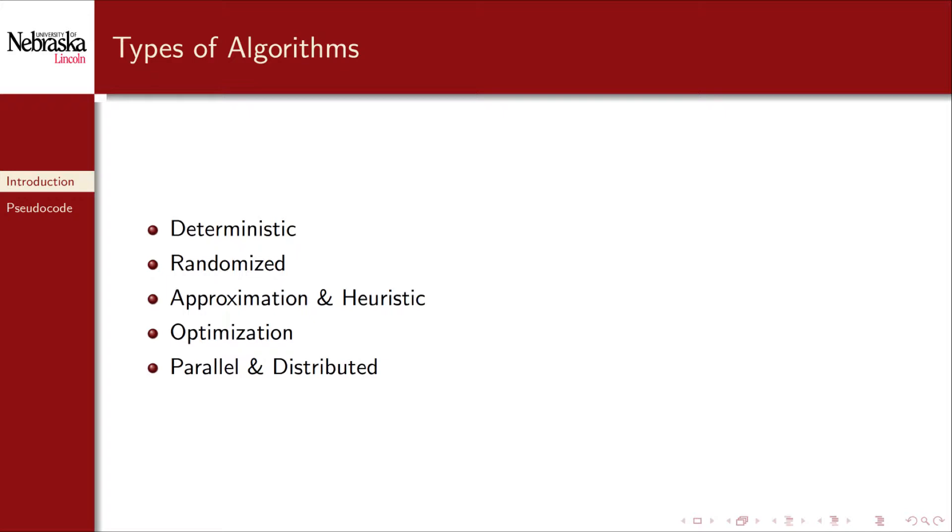Often algorithms are needed not just to find a solution but the best solution so as to maximize or minimize some benefit or cost. Some optimization problems can be solved exactly using deterministic algorithms. However other more difficult problems may be more efficiently solved with an approximation algorithm or a heuristic. These are algorithms that may not necessarily find the absolute best solution but which may instead find a solution that is close to the best solution. Often these sort of algorithms have a mathematical guarantee as to how close the produced solution will be to optimal. There are also parallel and distributed algorithms that attempt to solve a problem more efficiently using multiple computer cores or multiple independent computers. There are many more categories of types of algorithm and each one of these is a research area in and of itself.